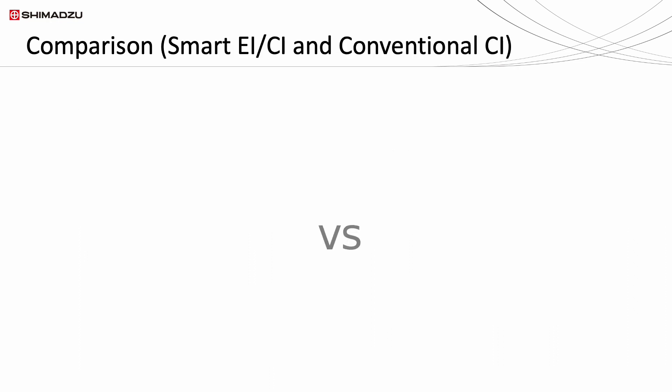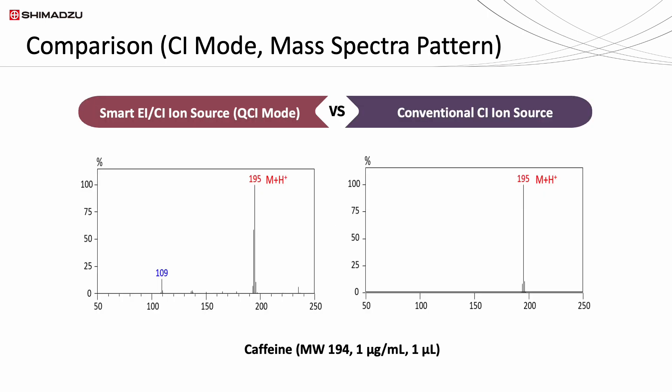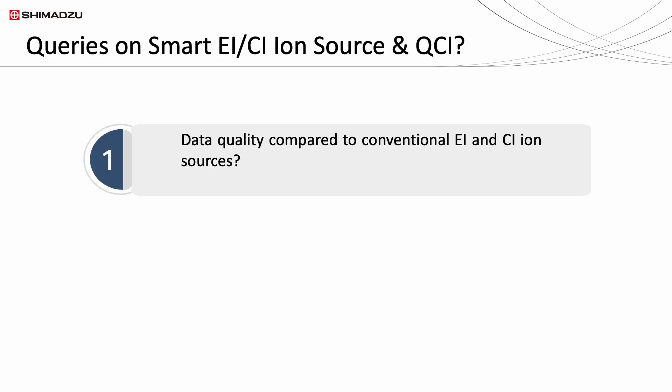Let us compare the data obtained from smart IS and a conventional CI ion source in CI acquisition mode. As shown here, the mass spectrum of caffeine in QCI mode of smart IS is similar to that obtained in conventional CI mode. The sensitivity acquired in QCI mode of smart IS is also comparable to conventional CI mode, but with better peak symmetric factor. Overall, both EI and CI data quality from smart IS are good, and the first query from users is answered.